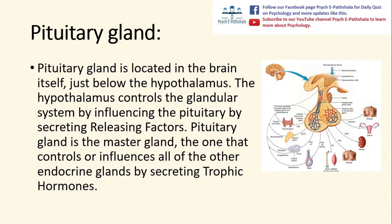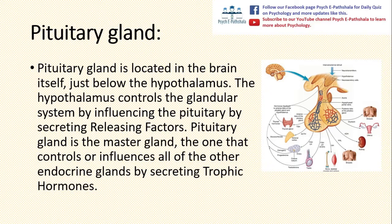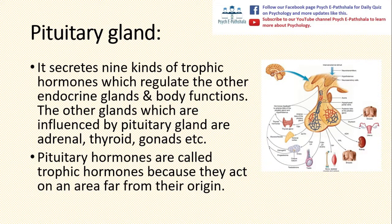Among all the endocrine glands in our body, the most important one is the pituitary gland. The pituitary gland is located in the brain itself, just below the hypothalamus. The hypothalamus controls the glandular system by influencing the pituitary by secreting several releasing factors. The pituitary gland is the master gland — the one that controls or influences all of the other endocrine glands by secreting trophic hormones. The pituitary secretes nine kinds of trophic hormones which regulate the other endocrine glands and body functions.